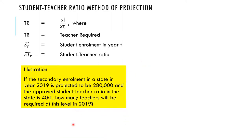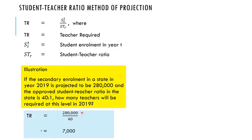Looking at this illustration: if the secondary enrollment in a state in year 2019 is projected to be 280,000 and the approved student-teacher ratio in the state is 40 to 1, how many teachers will be required at this level in 2019? By projection in 2019, we have 280,000 enrollment in the school, and the student-teacher ratio is 40 students to 1 teacher. So the total number of teachers required will be 280,000 over 40, which gives us 7,000.